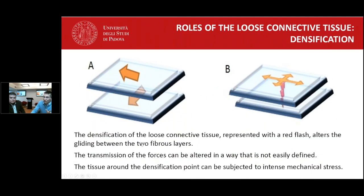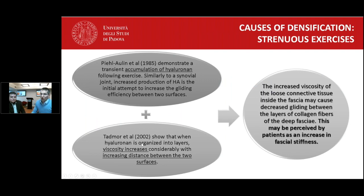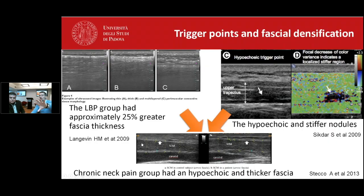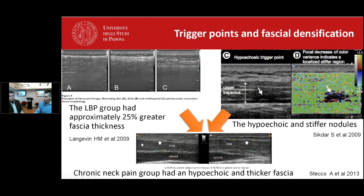Regarding densification, I think this is the most critical and most new information. Literature tells us that an accumulation of hyaluronic acid will generate an increase in viscosity. Elastosonography is a good way to evaluate this. This is the correlation between what we currently have in the literature — from Harvard with Helene Langevin, from NIH, or from our group — everybody finds that the fascia becomes hypoechoic, more stiff, and thicker. These are the three elements that all researchers are finding. It is good that from different perspectives everybody is reaching the same conclusion.